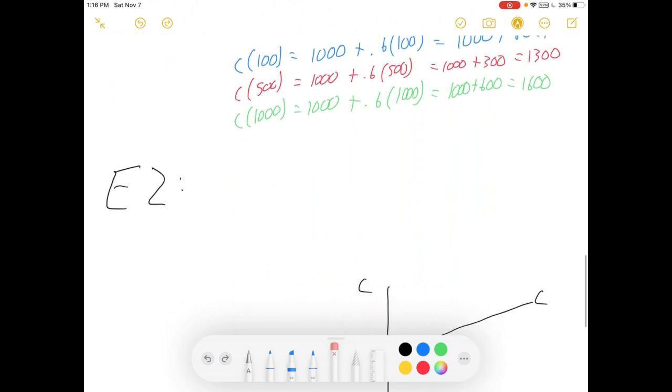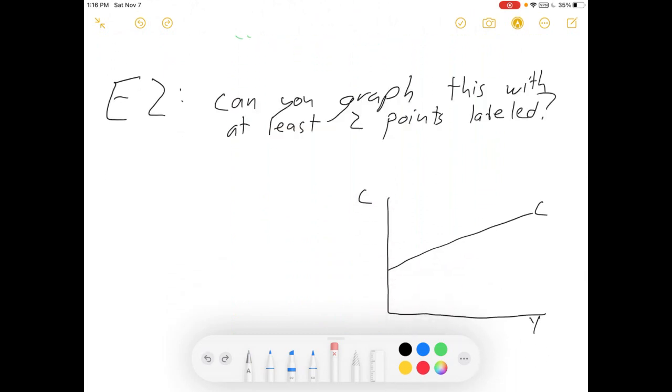Let's do a little bit more of a complicated example now. What if I give you a function, and you have to graph it? Can you graph this with at least two points labeled? C equals 500 plus 0.8Y.